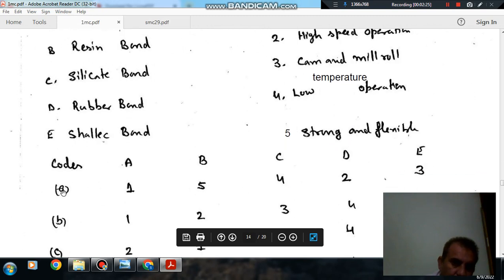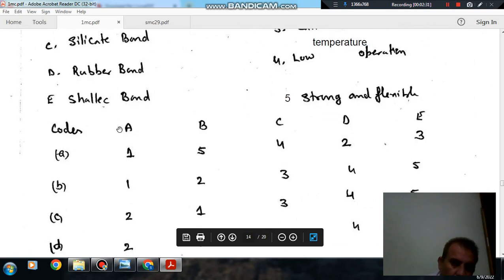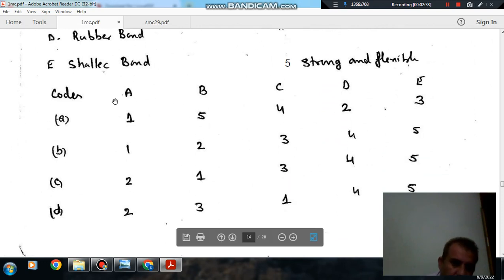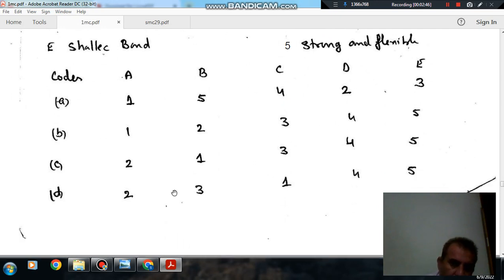So codes are option A: A related to 1, B 5, C 4, D 2, E 3. Option B: A 1, B 2, C 3, D 4, E 5. Option C: A 2, B 1, C 3, D 4, E 5. Option D: A 2, B 3, C 1, D 4, E 5.